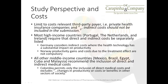South Africa is the only country in the sample that limited its perspective to only private health insurance. By implication, the type of costs included in the third-party payer perspective is limited to only those of the private health insurance company — indirect costs should not be included in the submission. This is a direct quote from the pharmacoeconomic guidelines in South Africa, unlike most high-income countries such as Portugal, the Netherlands, and Ireland that require both direct and indirect costs to be separately listed.